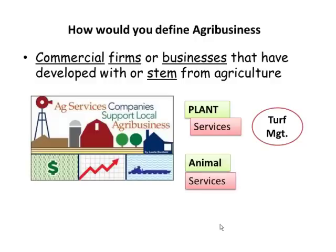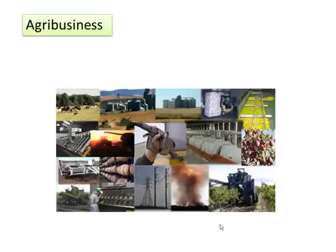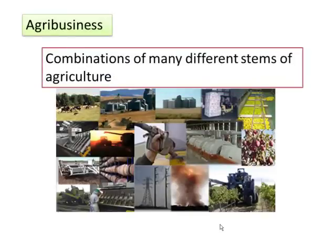On the animal side and services, you would think about care services — training or grooming — and that would be agribusiness. In agribusiness, you look at the combination of many different stems of agriculture. Some agribusiness operations may have many stems, and some may only have one or two, depending on what the operation is.